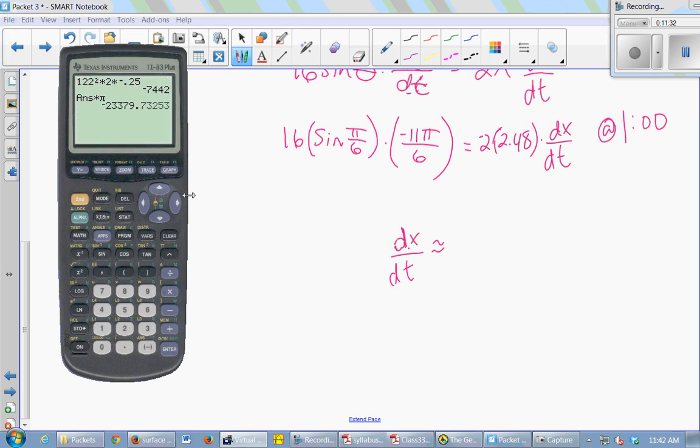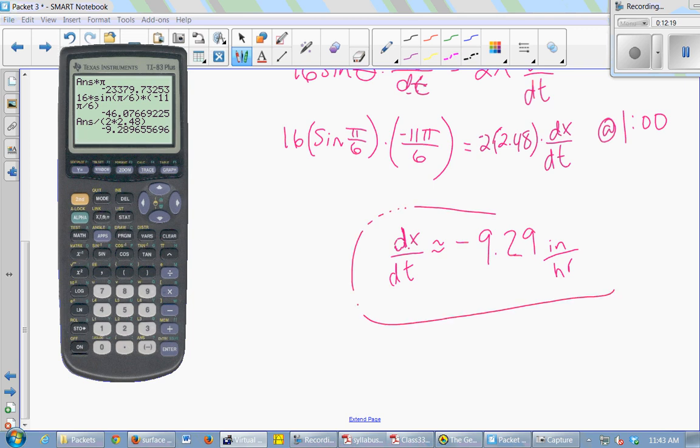Okay, mode. Okay, I'm in radian mode. Good. So I'm just going to do 16 times the sine of π/6. I'm getting a decimal anyway, so I might as well just have the calculator do it for me. Times negative 11π/6. And then I have to do that divided by 2 times 2.48. And then I get negative 9.28. Negative 9.29. And x was measured in inches? Yeah, inches per hour. All my time was being done in hours.